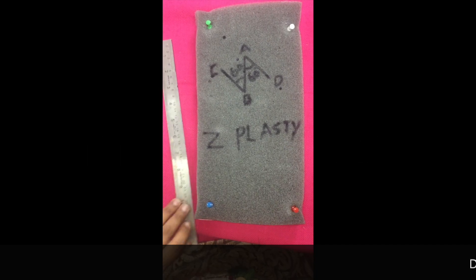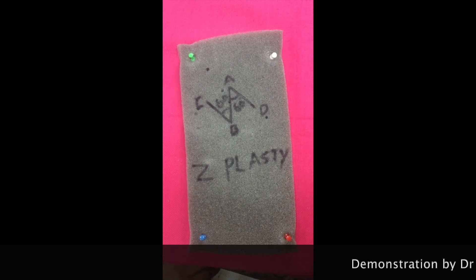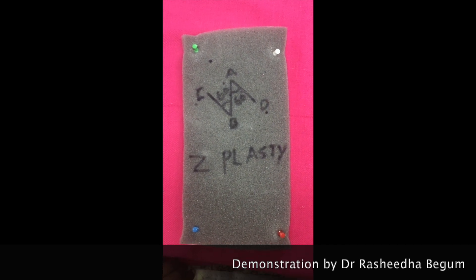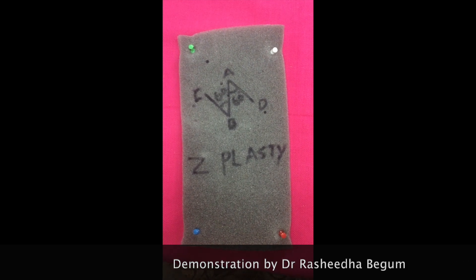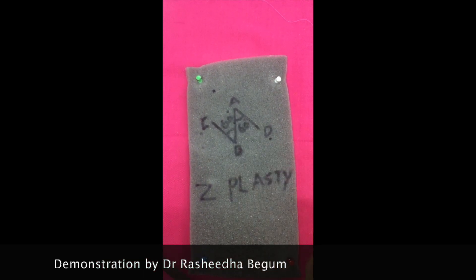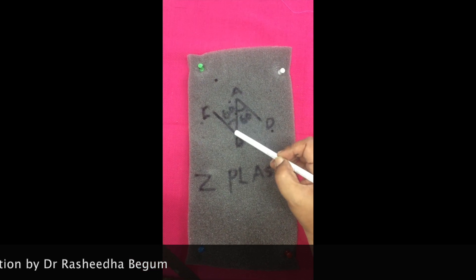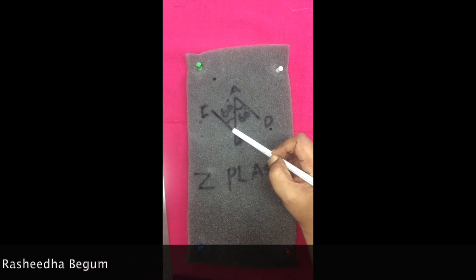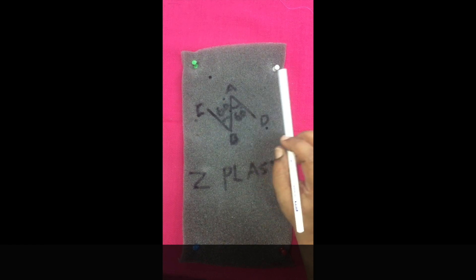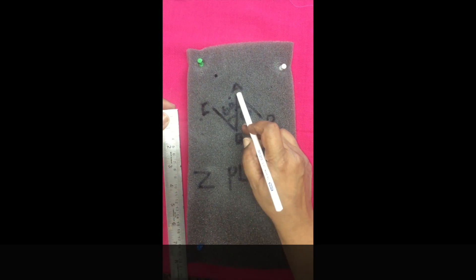The classic Z-plasty. Now we are going to see the classic Z-plasty before we go on to the other variations. The classic Z consists of two triangular skin flaps of equal size delimited by three incisions of equal length. Now this is the contracture angle AB and these are the two angles of 60 degrees which form the classic Z-plasty.